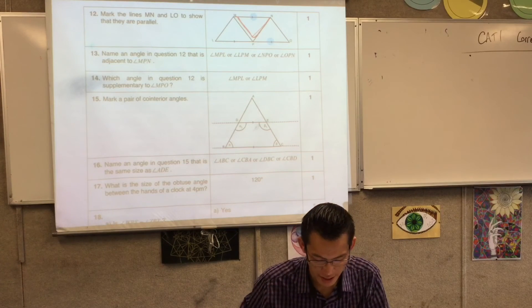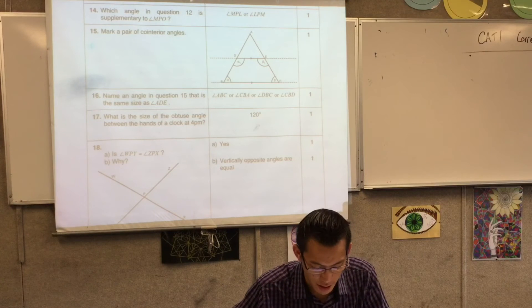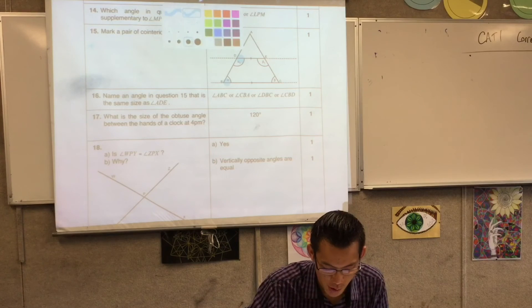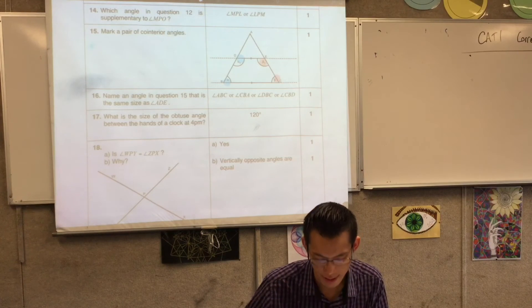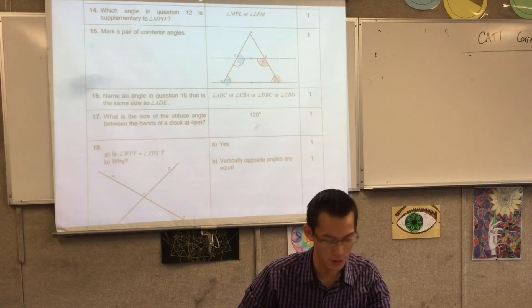Which angle is supplementary? You can read those yourself. Question 15. The pair of co-interior angles. You could have said this and this, or you could have said this and this. Do you see what we mean by co-interior? They're in between. They're boxed in by those parallel lines.